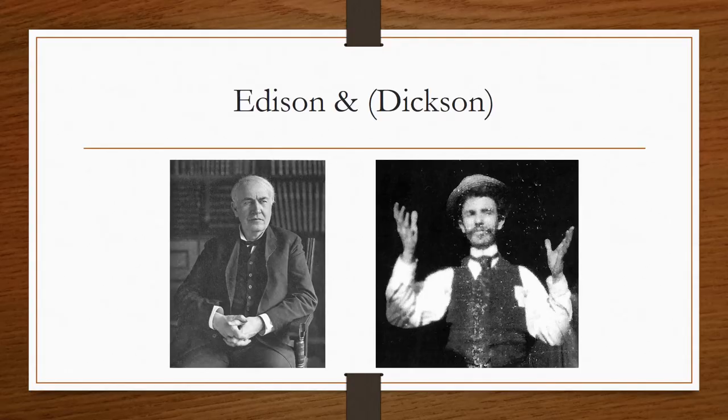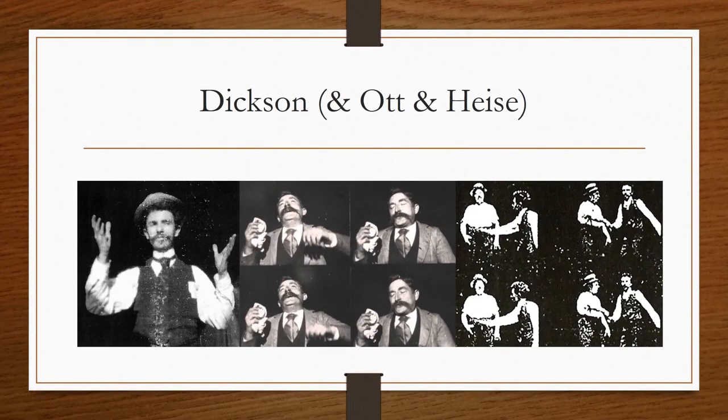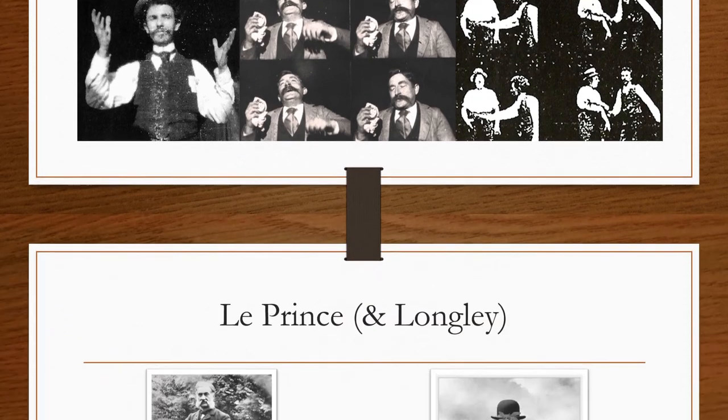So you have Edison talking about doing everything and not really giving credit to Dixon, who got quite cheesed off about this in time and wanted to tell everybody, like, including Will Day, that he really did it all. And whilst doing that, failed to mention the fact that he couldn't have really done it without Fred Ott and William Heiser, who were absolutely his right-hand men.